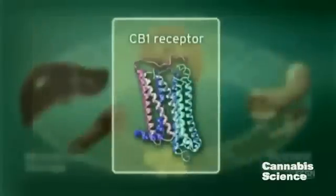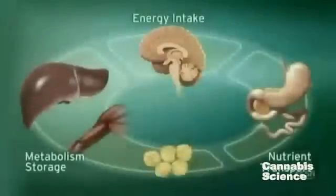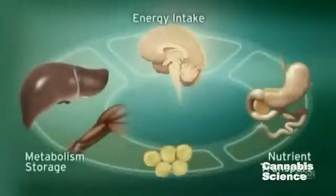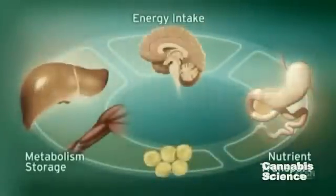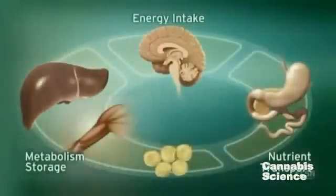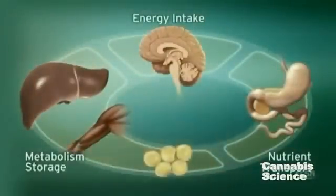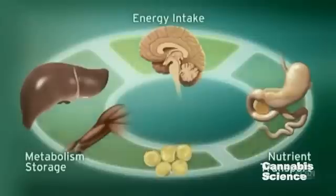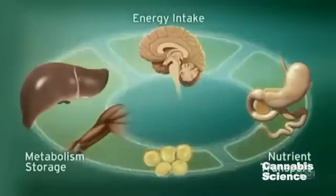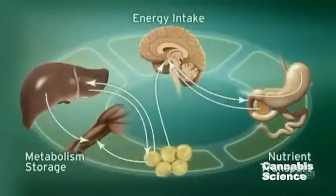CB1 receptors are located in the brain, digestive tract, muscle, and adipose tissue. Integration of these central and peripheral ECS components is achieved through neuronal and hormonal signaling.